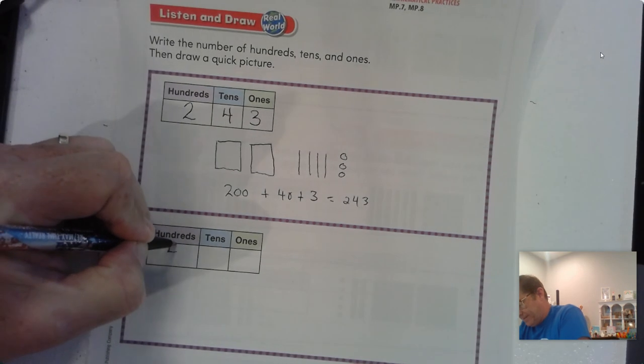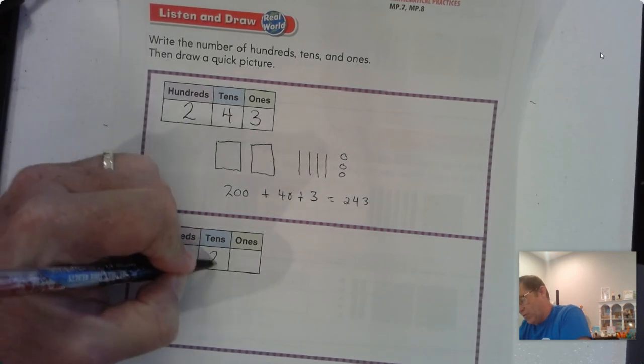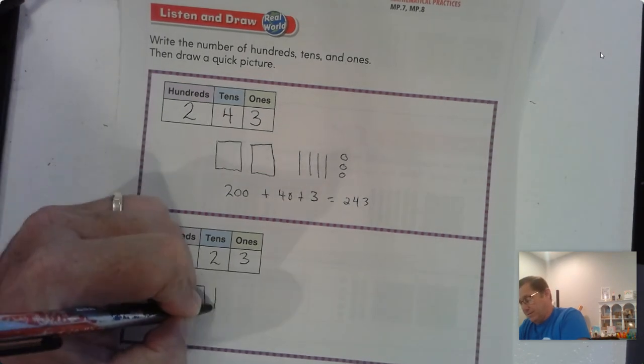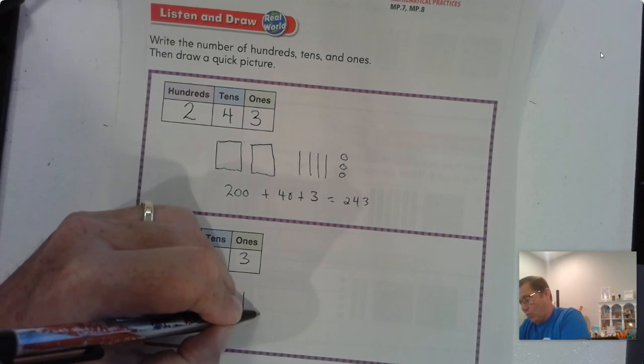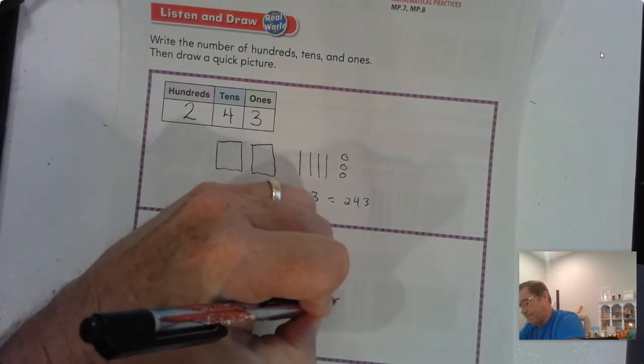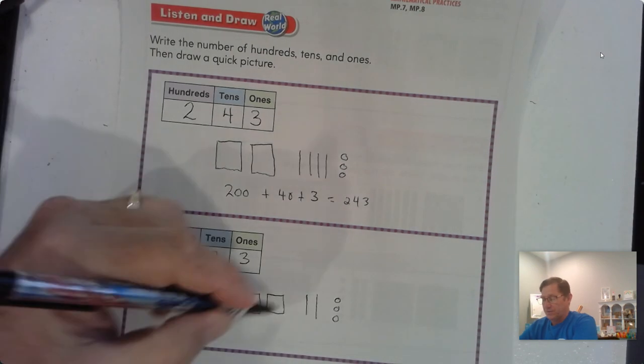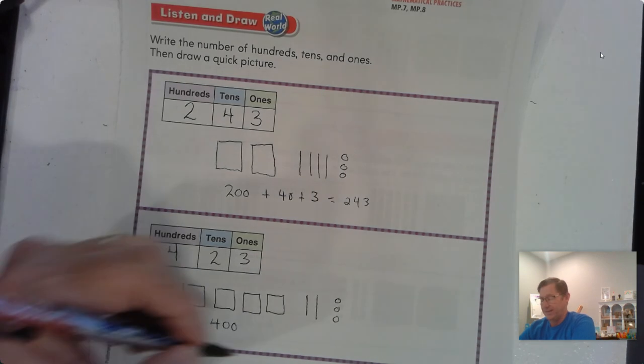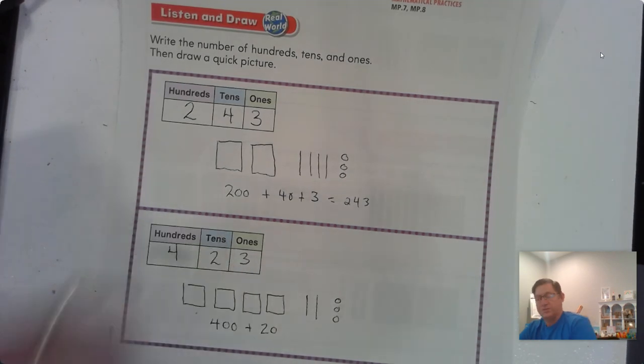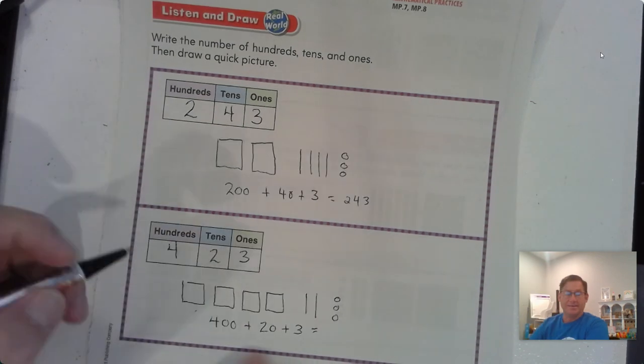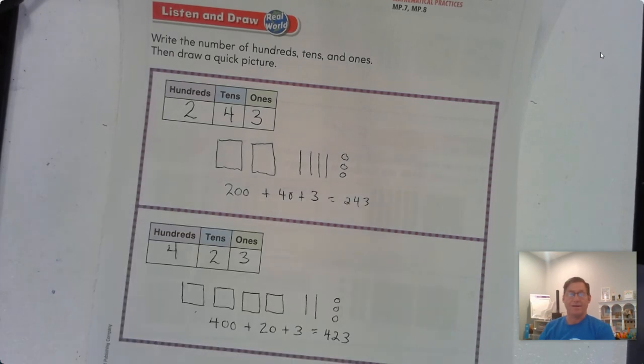All right. So what'd you come up with? We said 423. So 400s. We would have 400 blocks. We would have 2 ten rods, and we'd have 3 ones. So we could write this as 400. That's what the 400 blocks represents. Plus the 2 tens, which is 20, plus the 3 ones. And if we write that together, it's 423.